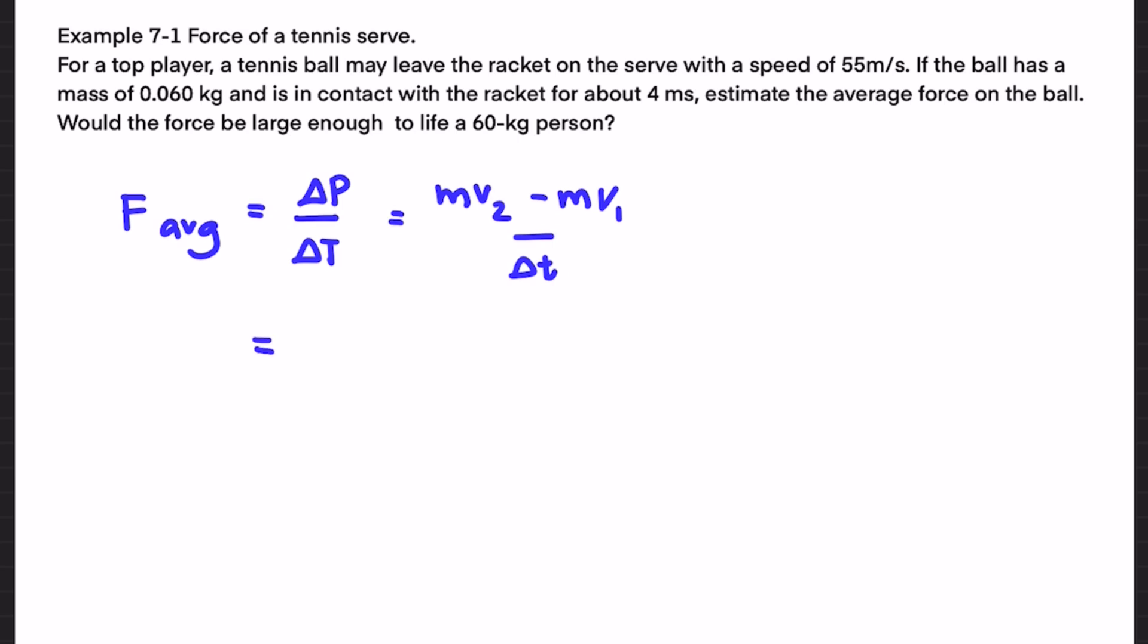Then substitute the numbers inside where m is 0.060 and v is 55 meters per second. m we already know and v1 we don't have because it's the initial velocity so it will be zero, divided by the t we got which is 4 ms or 0.004 and then we got around 800 newtons.